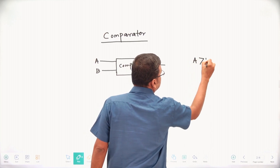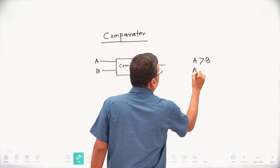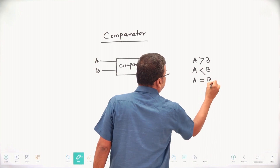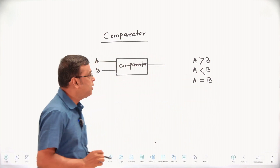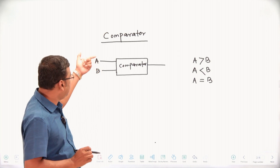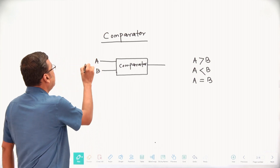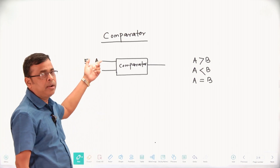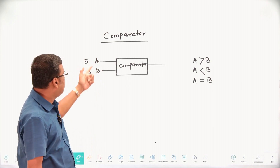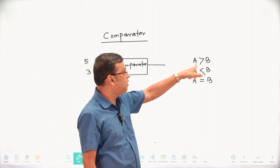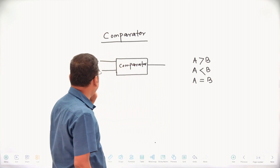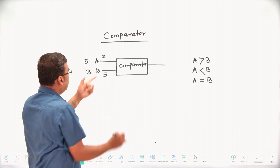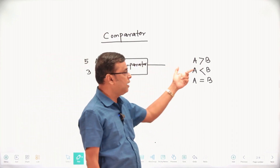There are three conditions: either A greater than B, or A less than B, or A equal to B. Suppose I tell you that is your decimal number system — that is your 5, this is your 3, so obviously A greater than B means 5 greater than 3. That is the first condition, A greater than B. If A is 2 and B is 5, then A is less than B.